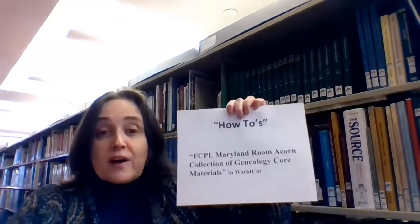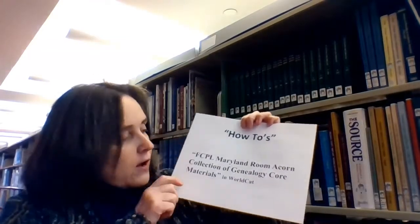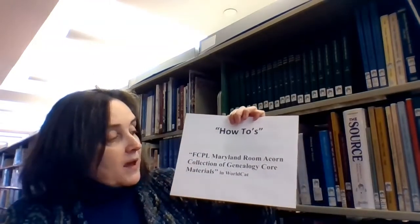And then finally, if you would like to get a list of all of the things here in our acorn collection, please feel free to contact the Maryland Room at mdroom at fcpl.org. It will give you by title everything that we have here in the Maryland Room. These are the sorts of things that you can look for anywhere where you go to do your research. You also can gain access to our acorn collection if you hang out on WorldCat at all. It's just FCPL Maryland Room Acorn Collection of Genealogical Core Materials.